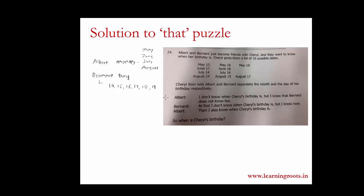Now coming to the first point what Albert is saying, I don't know when her birthday is but I know that Bernard does not know too. So Albert is pretty sure that Bernard is not confident of her birthday. In other words Albert is not given May as well as June. Why? Because May has May 19 as a date and June has June 18 as a date which are unique.